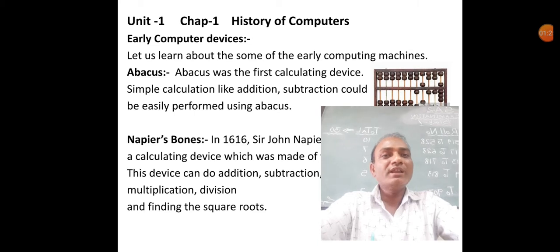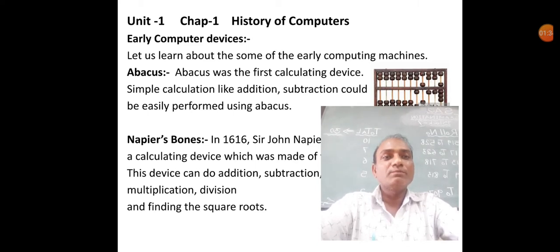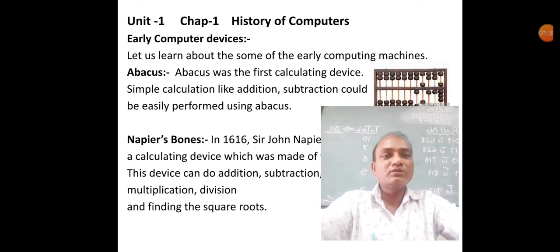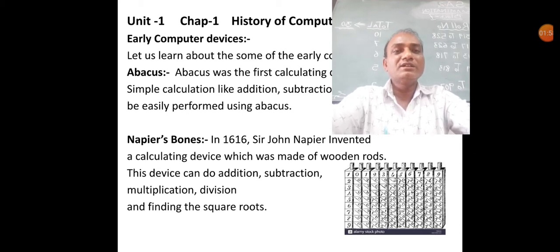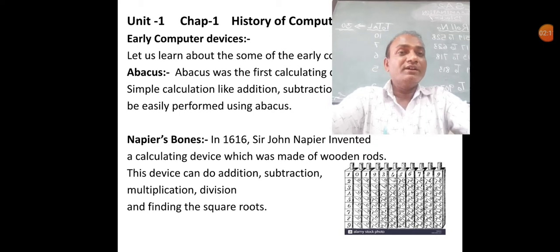The next computer device is Napier's Bone. In 1616, Sir John Napier invented a calculating device made up of wooden rods. This device could perform simple addition, subtraction, multiplication, division, and finding the square root. It is the second computing device, invented by the great mathematician Sir John Napier.